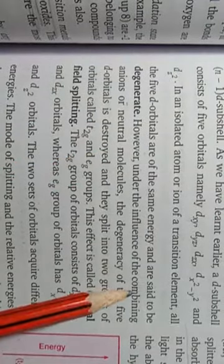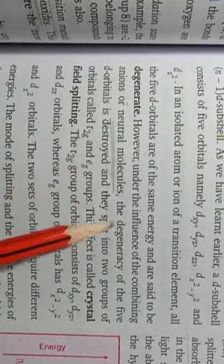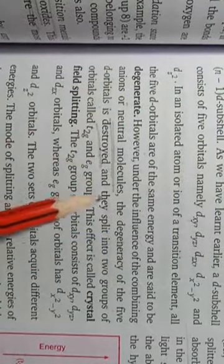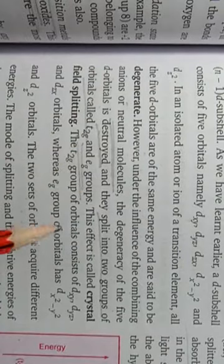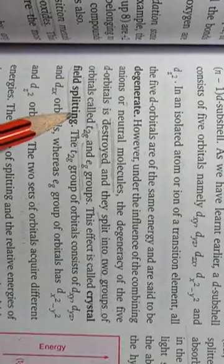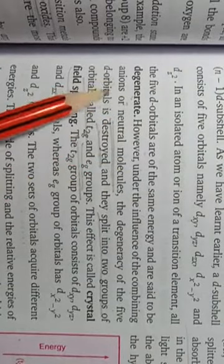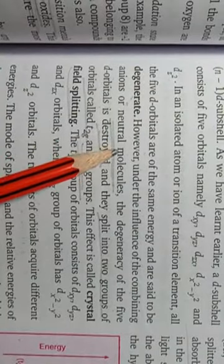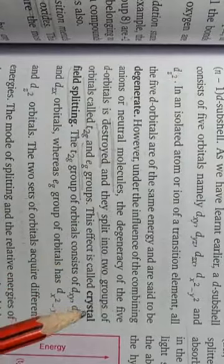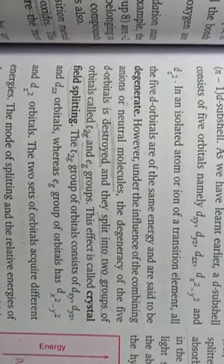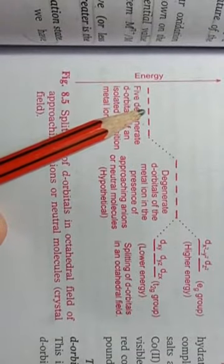But under the influence of combining anions or electron-rich neutral molecules, the degeneracy of the five d orbitals is destroyed and they split into two groups of orbitals called t2g and eg groups. This effect is called crystal field splitting — the breaking of degenerate d orbitals under the influence of anions or electron-rich neutral molecules approaching the transition metal for bonding.